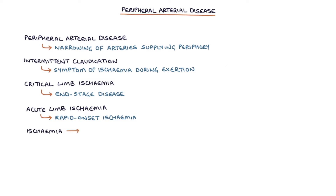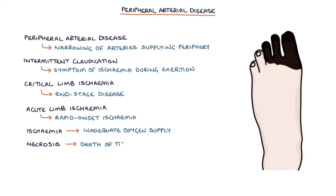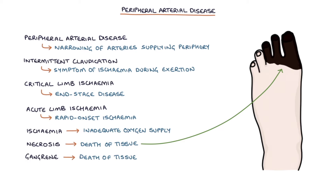Ischemia refers to inadequate oxygen supply to the tissues due to reduced blood supply. Necrosis refers to the death of tissue. Gangrene refers to the death of tissue specifically due to an inadequate blood supply.